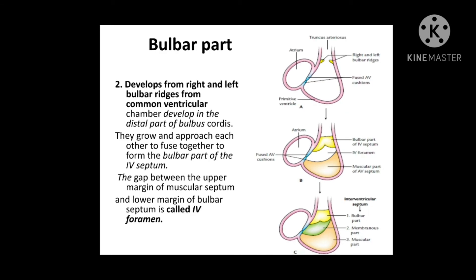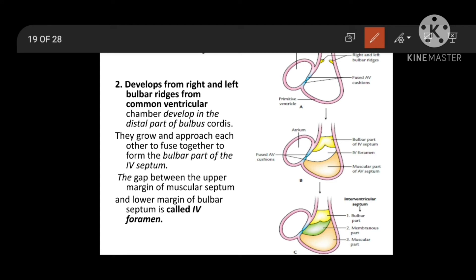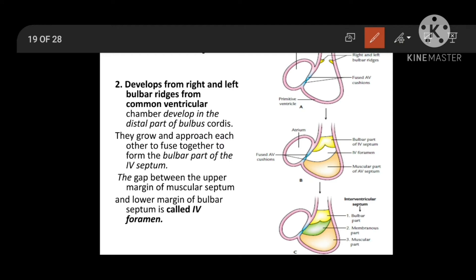The second part is the bulbar part. Right and left bulbar ridges develop in the distal part of the bulbous cordis. These ridges fuse in the midline and form the bulbar septum, which is growing downwards.